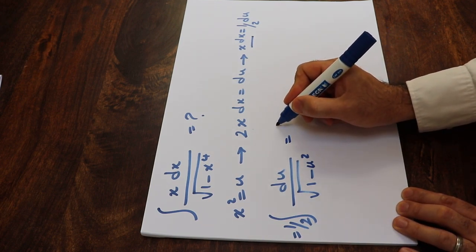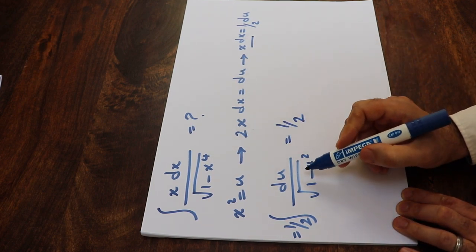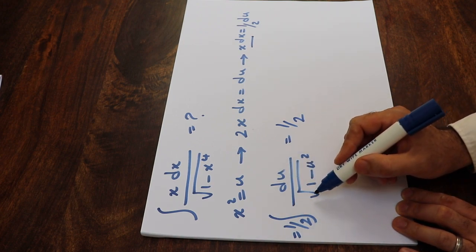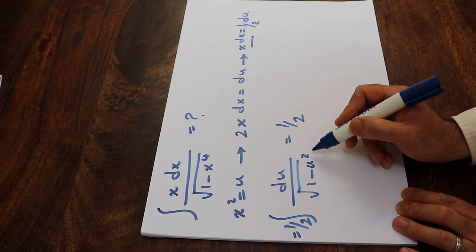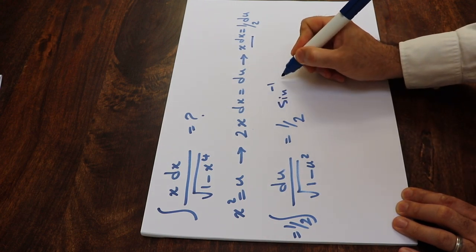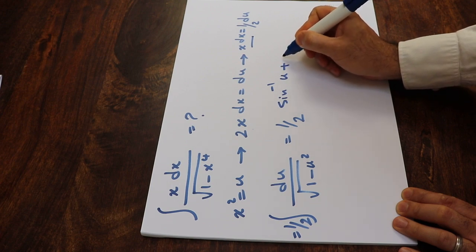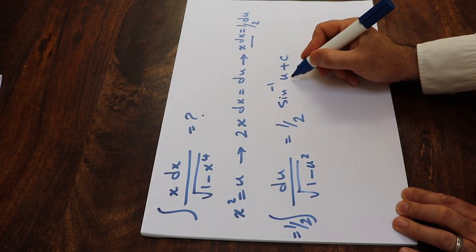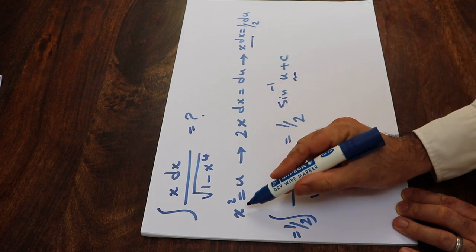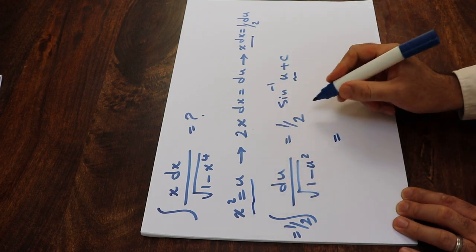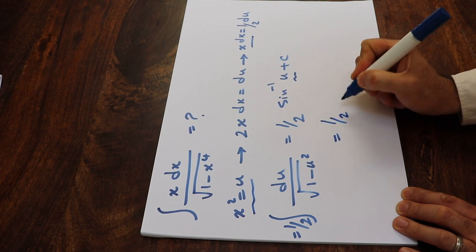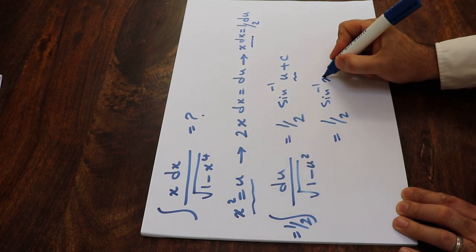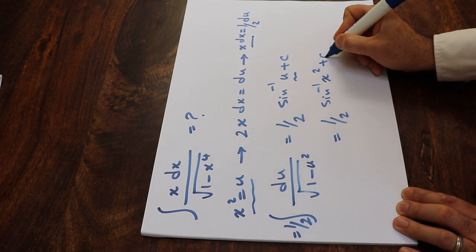So that will be equal to 1/2. From the table of integrals, we know that the integral of du divided by the square root of 1 minus u² is equal to arcsin(u) plus C. All you need to do is substitute the parameter u with x², giving 1/2 arcsin(x²) plus C.